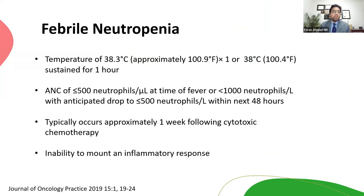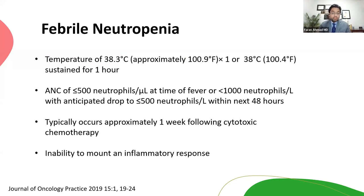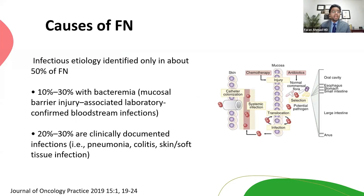Briefly about febrile neutropenia: fever is defined as a single temperature of 100.9°F or 100.4°F sustained for one hour, with neutropenia — ANC less than 500, or less than 1000 but expected to fall below 500 within 48 hours. This typically happens within a week after systemic cytotoxic chemotherapy. Importantly, you'll only find an organism 50% of the time; only 10–30% will have bacteremia, and only 20–30% will have an identifiable organ system source, so you're operating in a gray zone half the time.